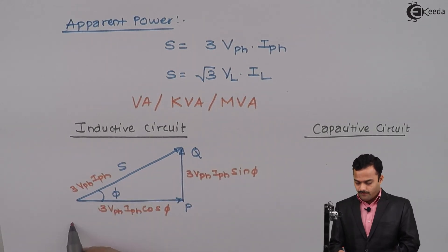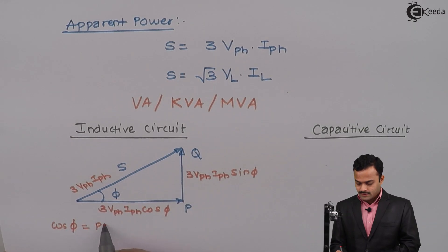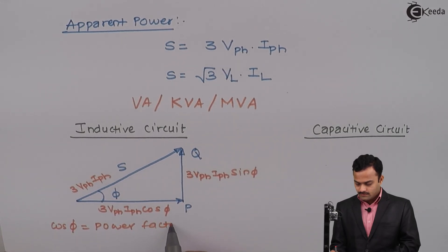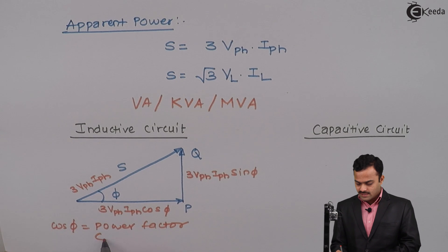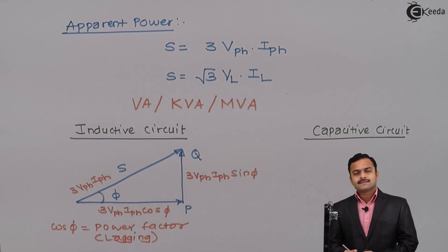And here, φ is the phase angle, cos φ will be the power factor. It is an inductive circuit, hence the nature will be lagging. That means, current lags voltage by angle φ. Obviously, current and voltage here are the phase quantities.